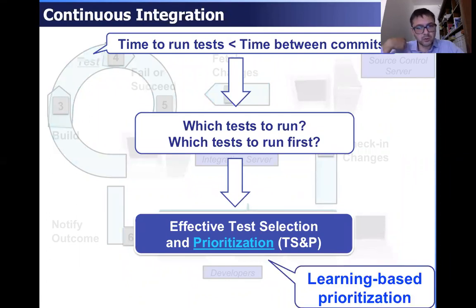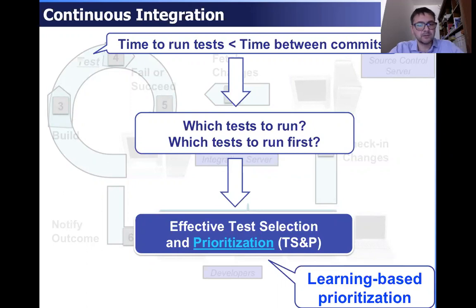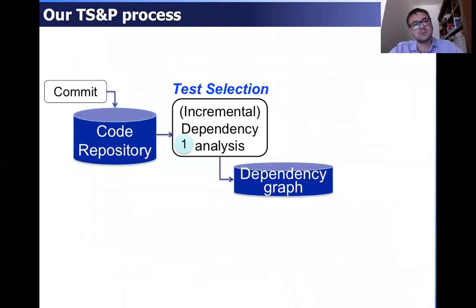In this work, we focus on the test prioritization problem — learning-based prioritization — but we also use a common conventional test selection technique in order to give the prioritization algorithms a subset of tests to prioritize at each continuous integration cycle.